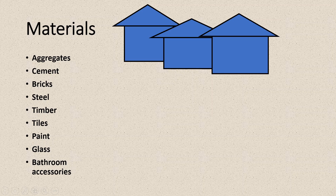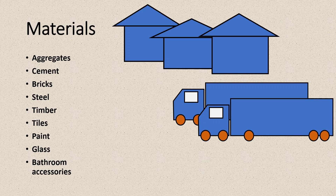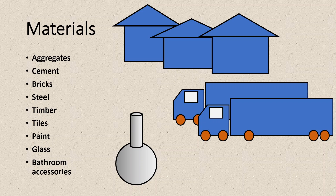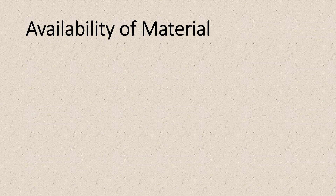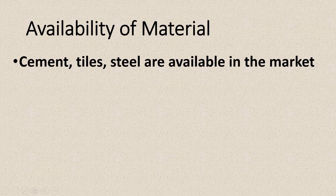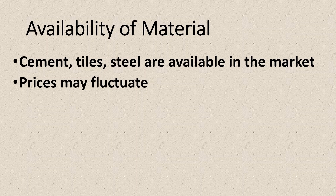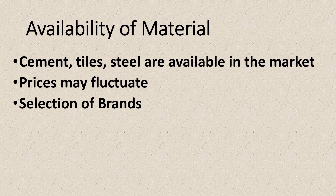It is very important that you maintain a smooth supply of materials to the construction site according to need, and for that, storage, transportation, and quality control must be handled by the construction manager. You also need to make sure the material is available in the market. For example, cement, tiles, and steel are generally available year-round, but if your construction will continue for several years, you may need to make a deal with suppliers to protect yourself from fluctuating prices. You may also be limited by choice of brands, either by market availability or by the client's requirements.